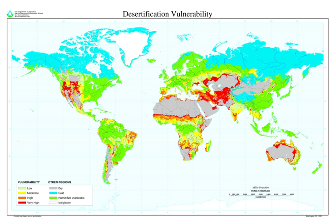Desertification is a type of land degradation in which a relatively dry area of land becomes a desert, typically losing its bodies of water as well as vegetation and wildlife. It is caused by a variety of factors, such as climate change — particularly the current global warming — and through the overexploitation of soil through human activity. When deserts appear automatically over the natural course of a planet's life cycle, then it can be called a natural phenomenon.